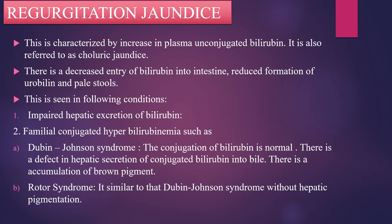The next type of jaundice is regurgitation jaundice. This is characterized by an increase in plasma conjugated bilirubin. It is also referred to as choleric jaundice. There is decreased entry of bilirubin into the intestine, reduced formation of urobilin, and pale stools. This is seen in conditions such as impaired hepatic excretion of bilirubin and familial conjugated hyperbilirubinemia such as Dubin-Johnson syndrome.